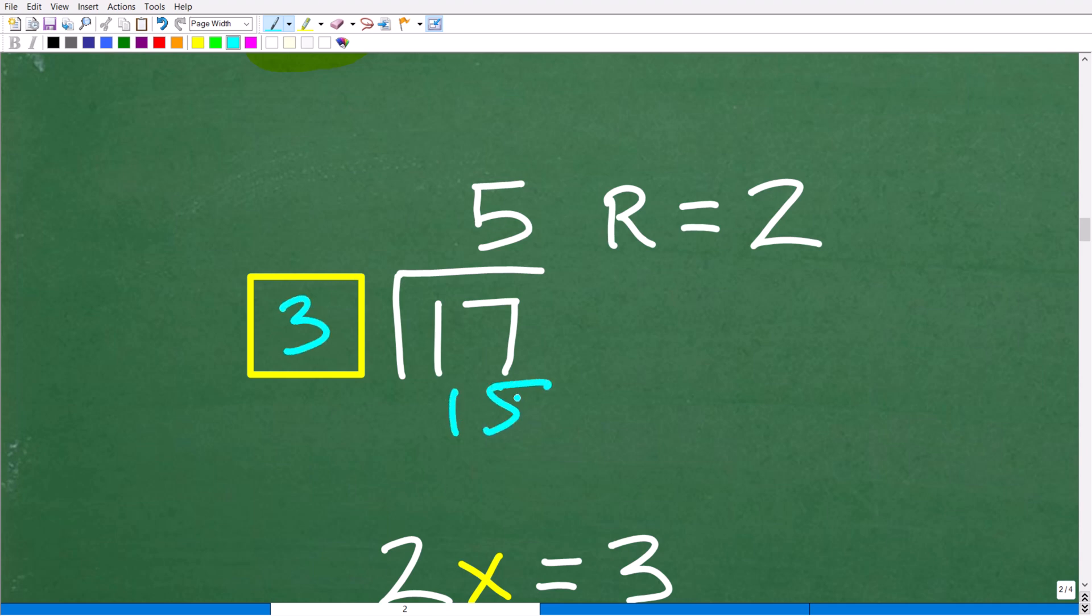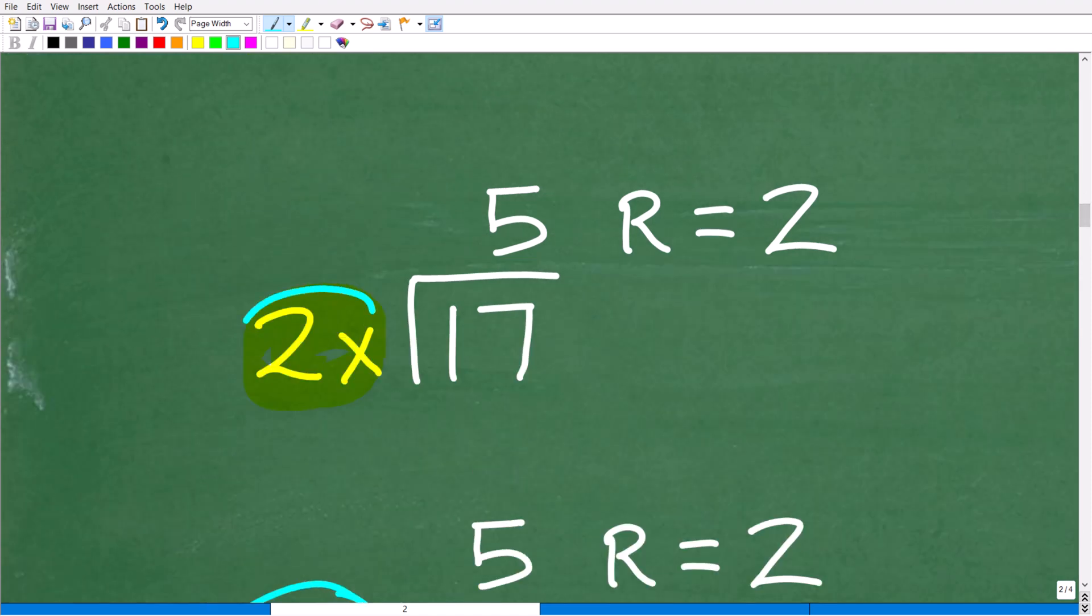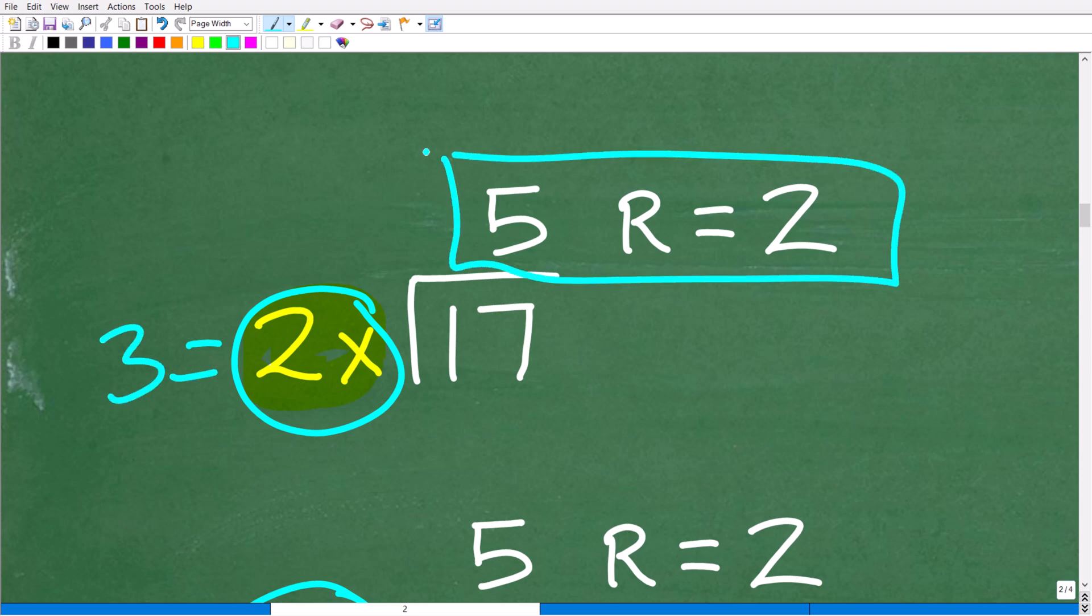Well, 5 times 3 is 15. And then we could subtract 15 from 17. We end up with 2. 3 can't go into 2. So, indeed, the answer is 3. In other words, this right here, OK, this 2x must be equal to 3 in order for the answer to be 5 remainder 2.